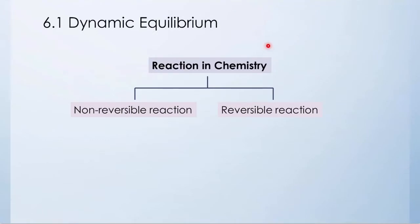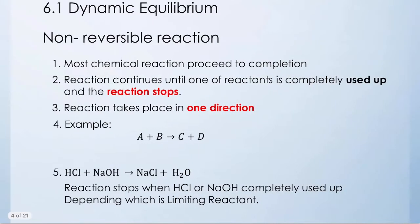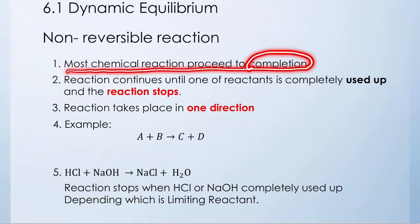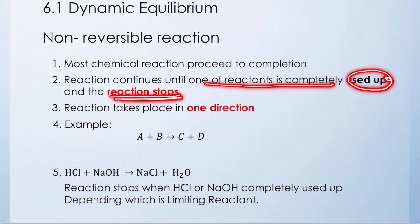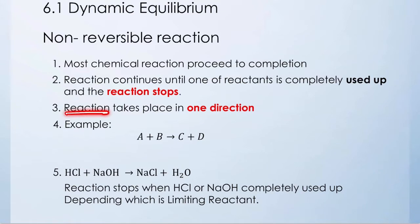There are 2 types of reaction in chemistry. The first one is Non-Reversible Reaction, and the second one is the Reversible Reaction. Let's take a look at Non-Reversible Reaction first. Most chemical reactions proceed to completion, and the reaction will continue until one of the reactants is completely used up. Therefore, the reaction will stop. In Non-Reversible Reaction, the reaction will take place in one direction.